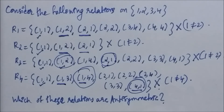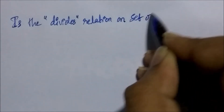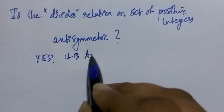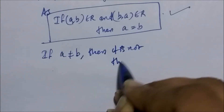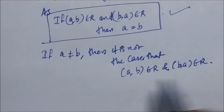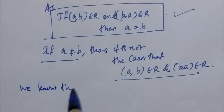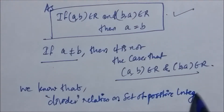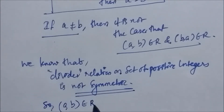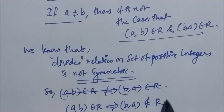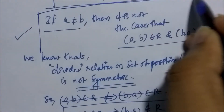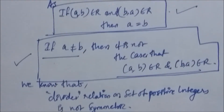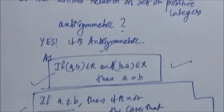An antisymmetric relation example: Is the divides relation on the set of positive integers antisymmetric? Yes. If (a,b) is in the relation and (b,a) is in the relation, then a equals b. To prove this, we take the contrapositive: if a ≠ b, then it is not the case that both (a,b) and (b,a) belong to R. Since the divides relation is not symmetric, (a,b) in R does not imply (b,a) in R. Hence the relation is antisymmetric.